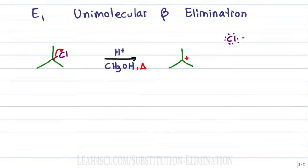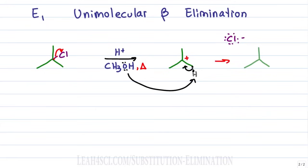For elimination, instead of a solvolysis where the nucleophile attacks the carbocation directly, the nucleophile is looking for a beta hydrogen — a hydrogen that sits on the carbon next to the carbocation — and uses its electrons to pluck off that hydrogen. The electrons that bind hydrogen to carbon stay on the molecule and collapse towards the positive charge to give the final product, which has a pi bond between the alpha and beta carbon.